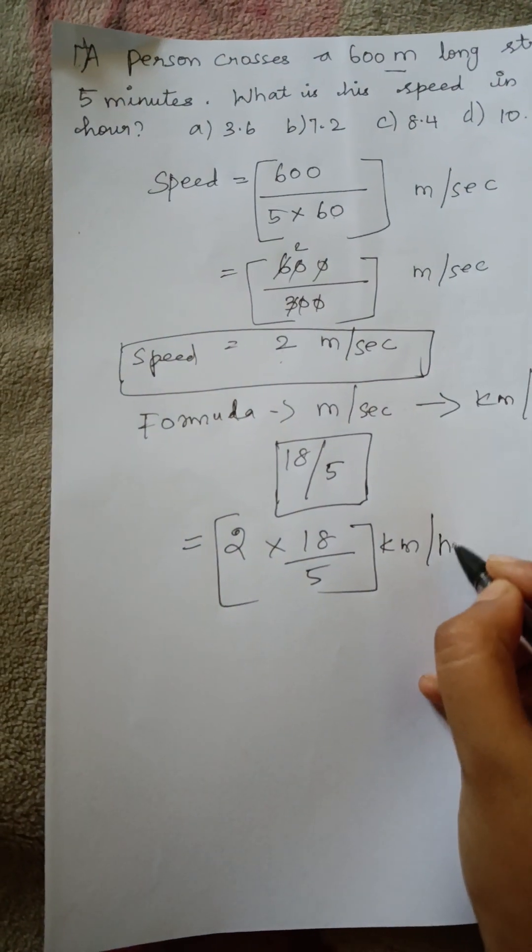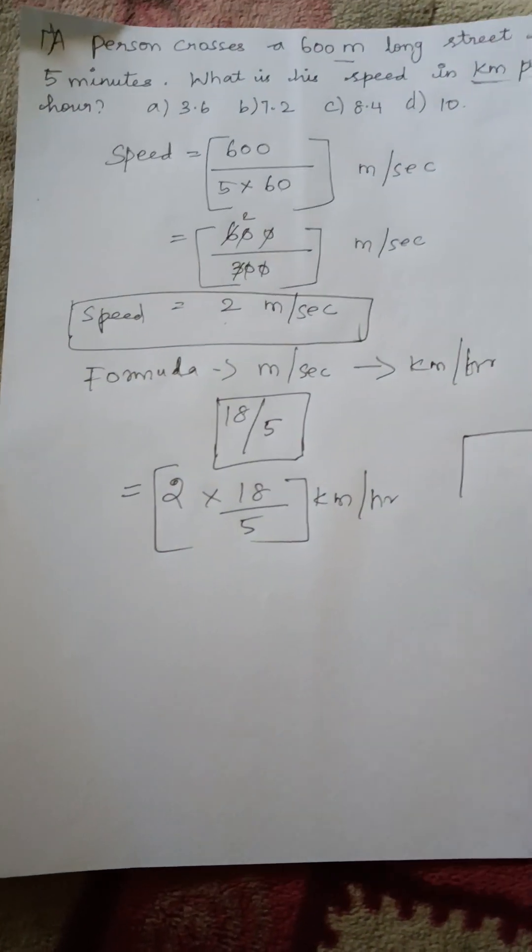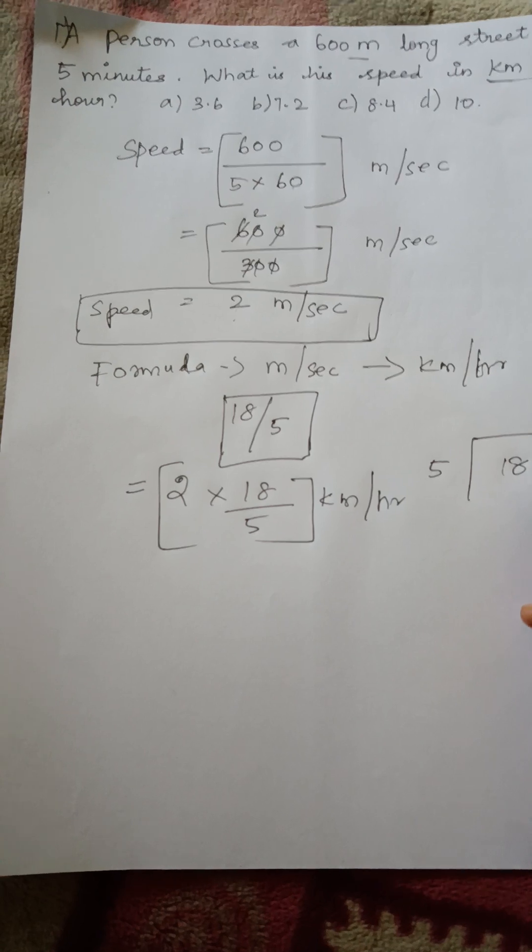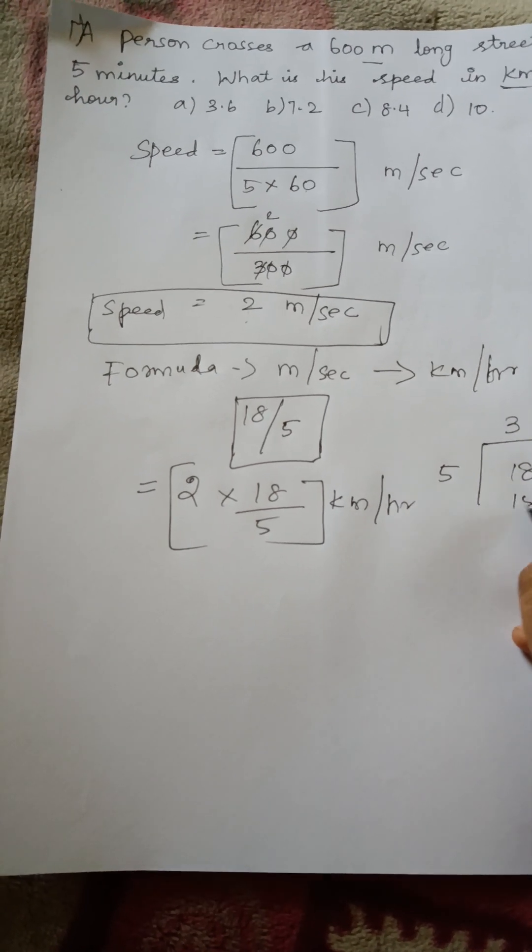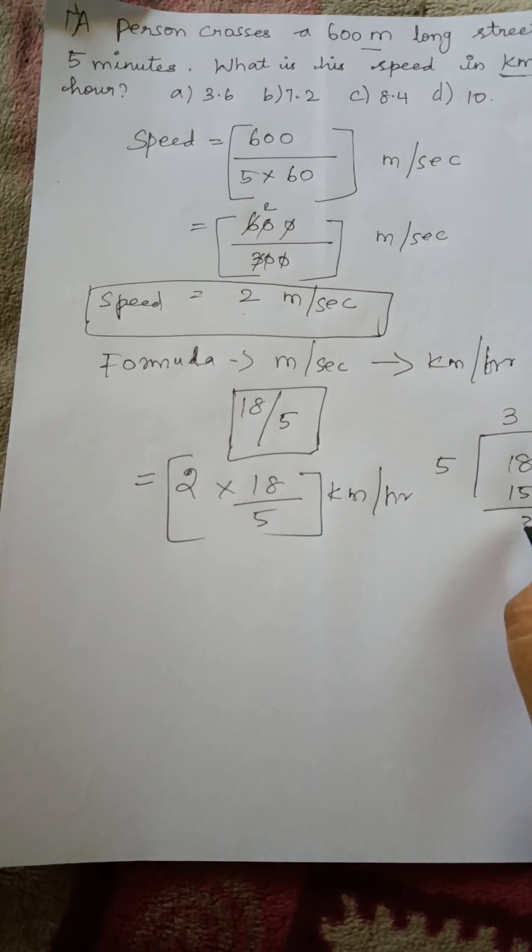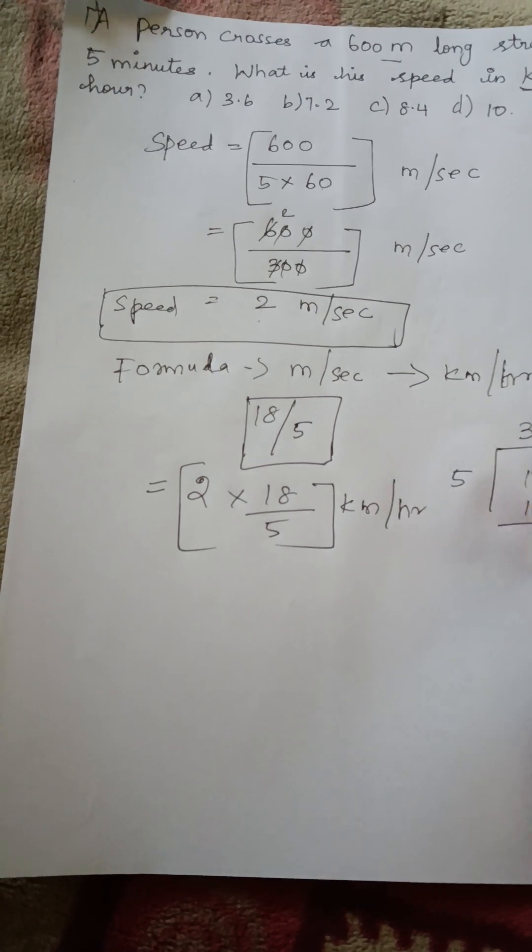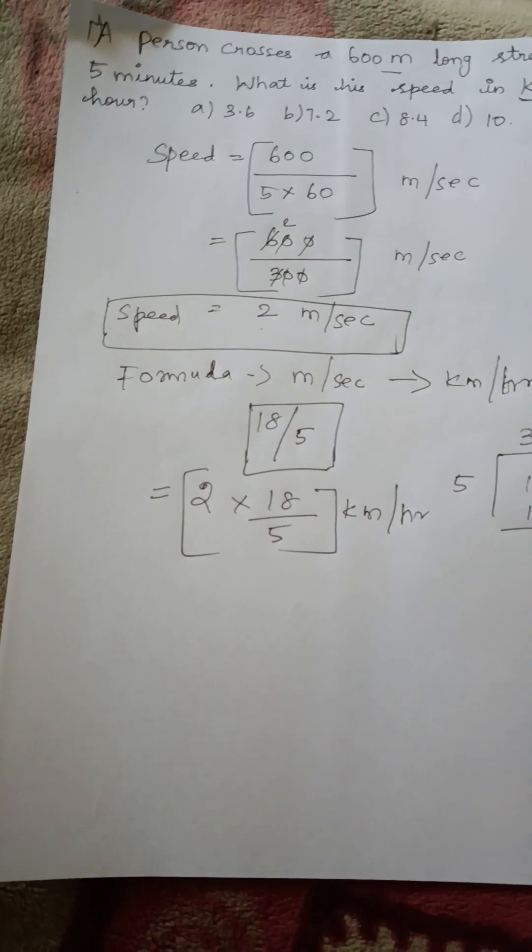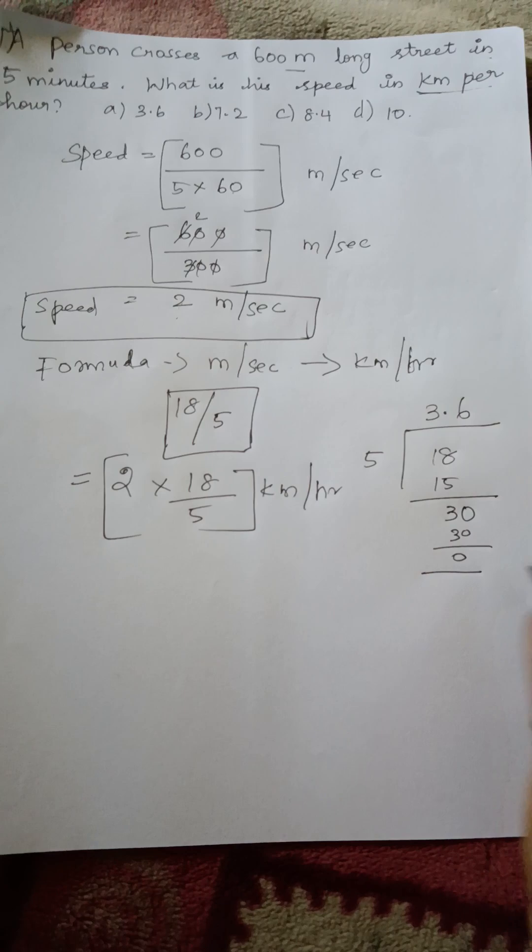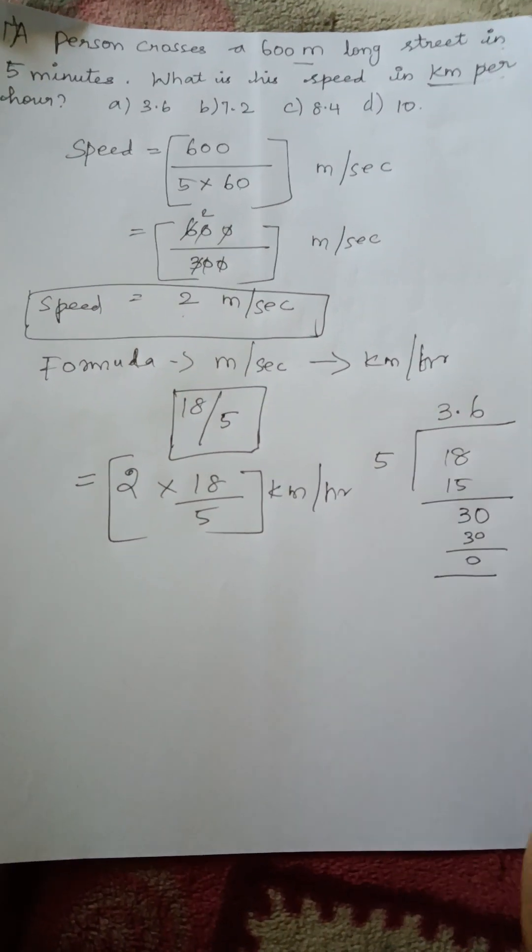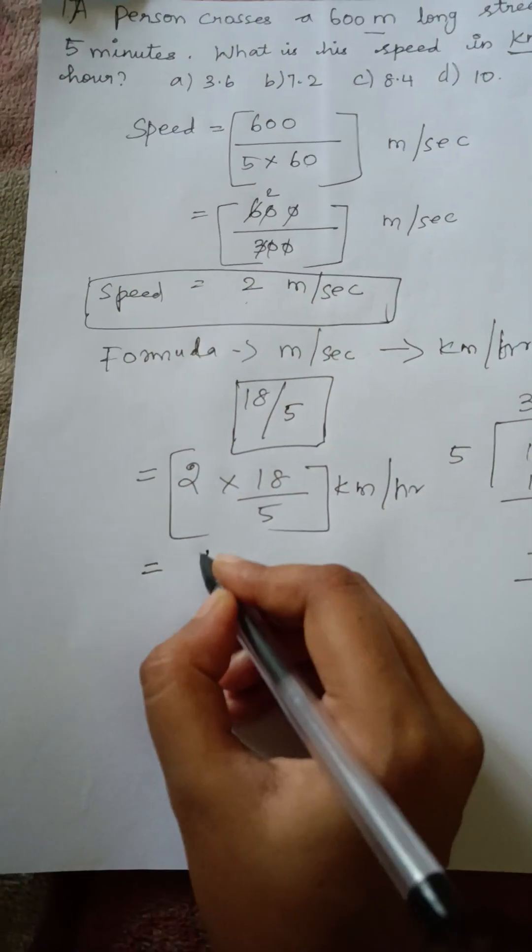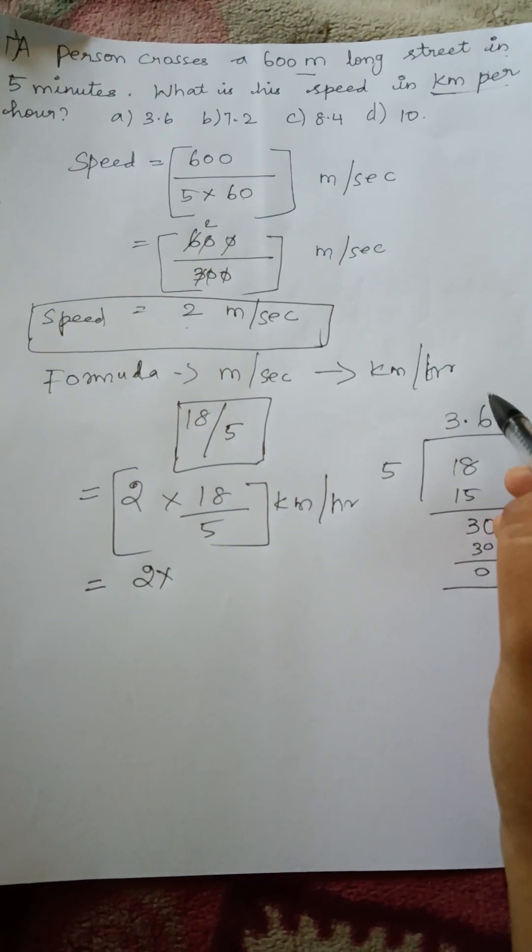Kilometer per hour. This is a rough calculation: 18 divided by 5, 3 times 5 is 15, so 18 divided by 5 equals 3.6. This is the rough note which I have done, and now you can see 2 into 3.6.